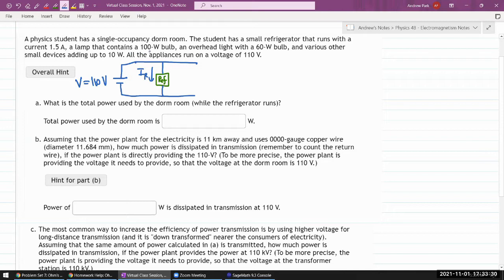And there's a lamp that contains a 100-watt bulb. So there's a lamp. So I'll just write PL as indicating the amount of power that this lamp uses. And we have to compute some other quantities. And an overhead light with a 60-watt bulb. So there's an overhead that's drawing some power, PO, and various other small devices adding up to, okay. So I'm just going to draw a black box that indicates all the other stuff.